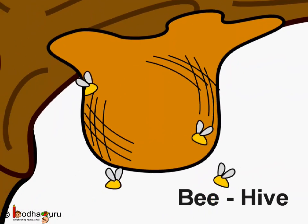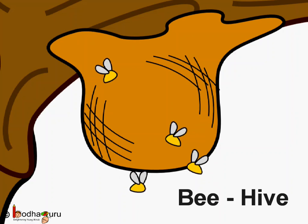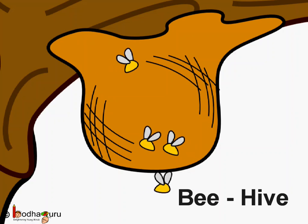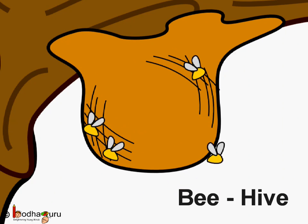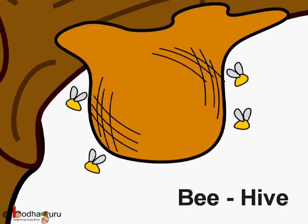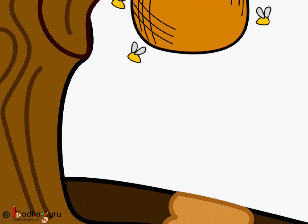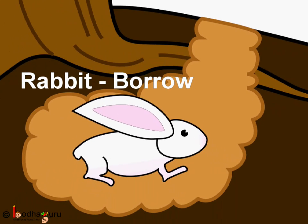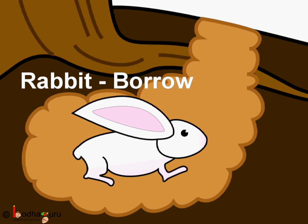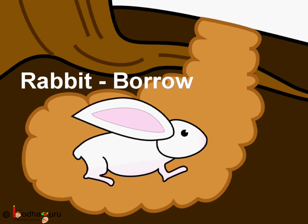The honey bees make a hive to live in. The rabbits live in burrows that they dig underground.